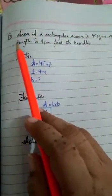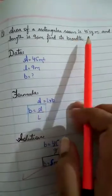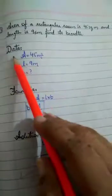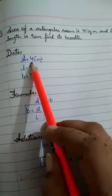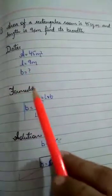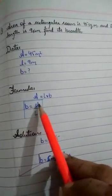And the last question is that area of a rectangular room is 45 square meter and its length is 9 meters. Find its breadth. Data, area which we have is 45. Length is 9 meters. Breadth, we don't know. The formula is B equals A upon L.